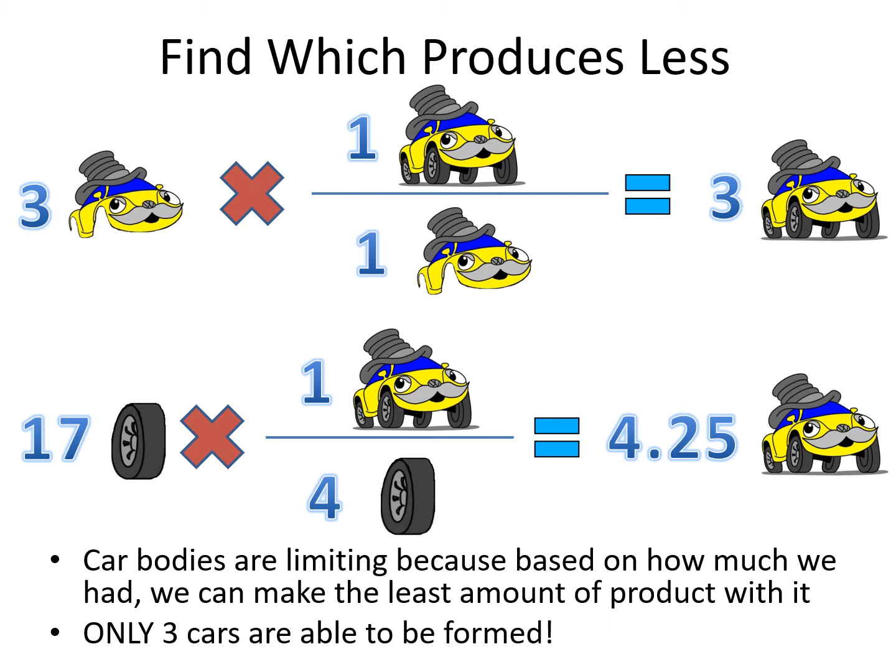Also, that smaller of the two amounts — which in this case is 3 — is the amount that actually gets produced. We are only able to make three cars, because after that, there's nothing for the wheels to attach to.